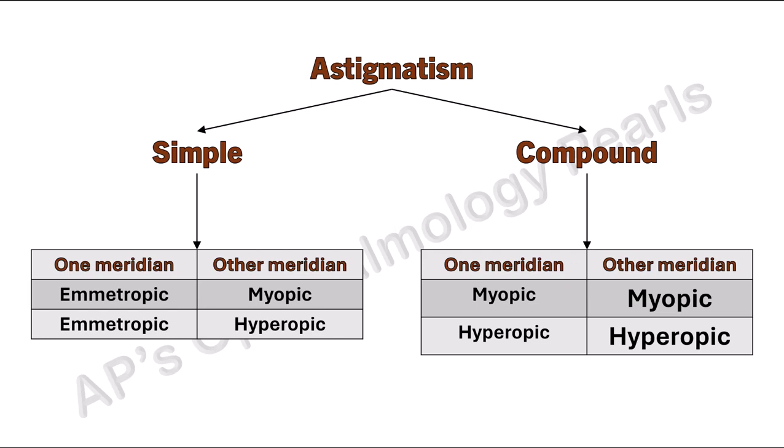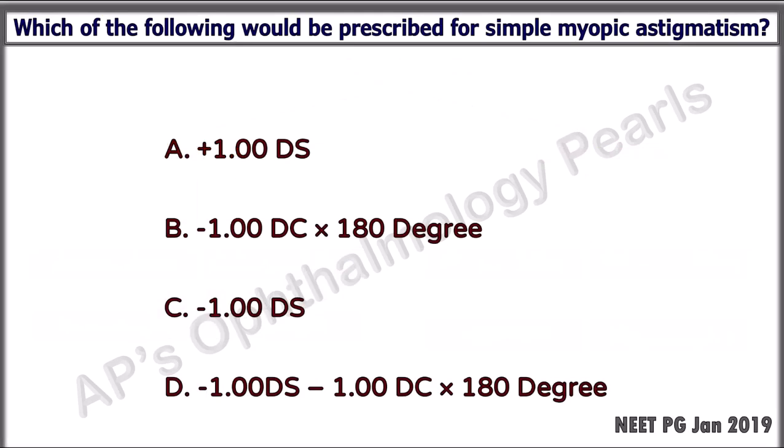For example, compound myopic astigmatism could have minus two diopters in one meridian and minus one diopter in another meridian. Coming back to the original question, in this first answer the prescription is for a sphere — DS stands for diopter sphere — so there is no astigmatism.